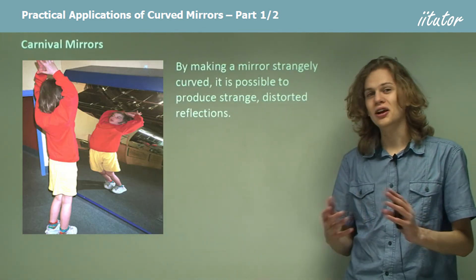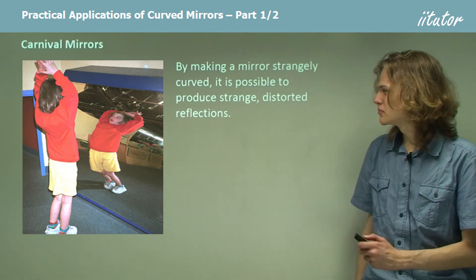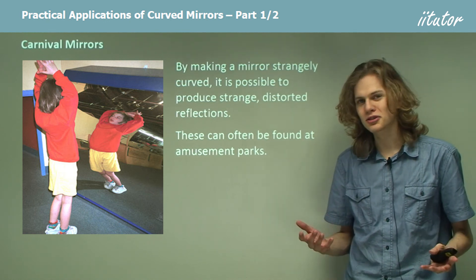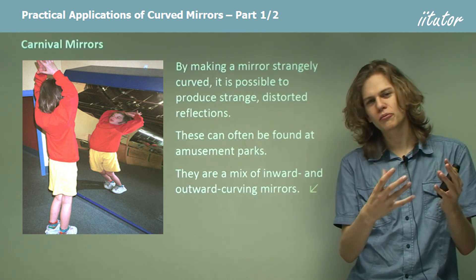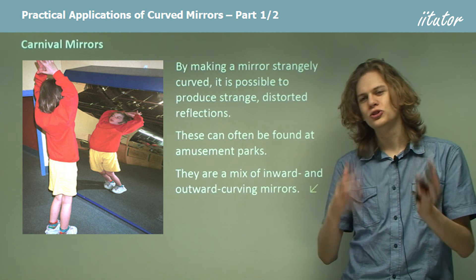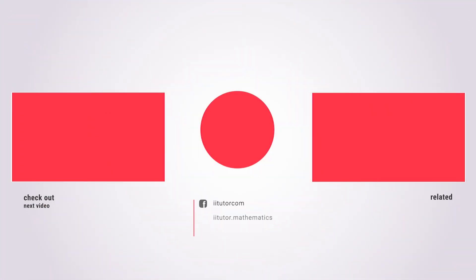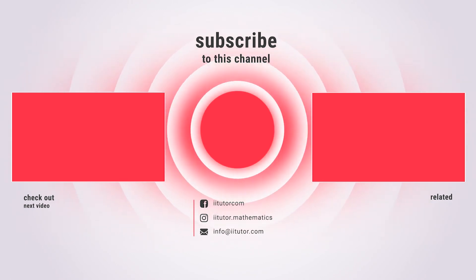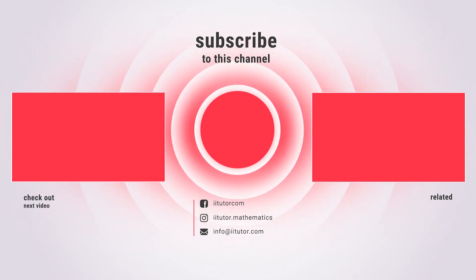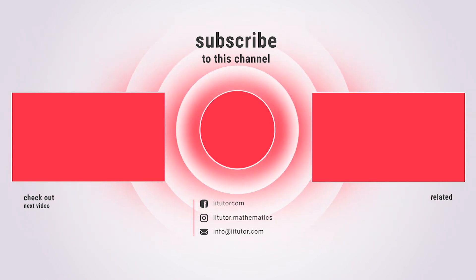Now if we make a mirror very strangely shaped, we can produce very strange reflections, as we can see in this photograph over here. These can often be found at amusement parks and are known as carnival mirrors. They're a mix of concave bits of a mirror and convex bits of a mirror joined up to make a weird, distorted, strange reflection.